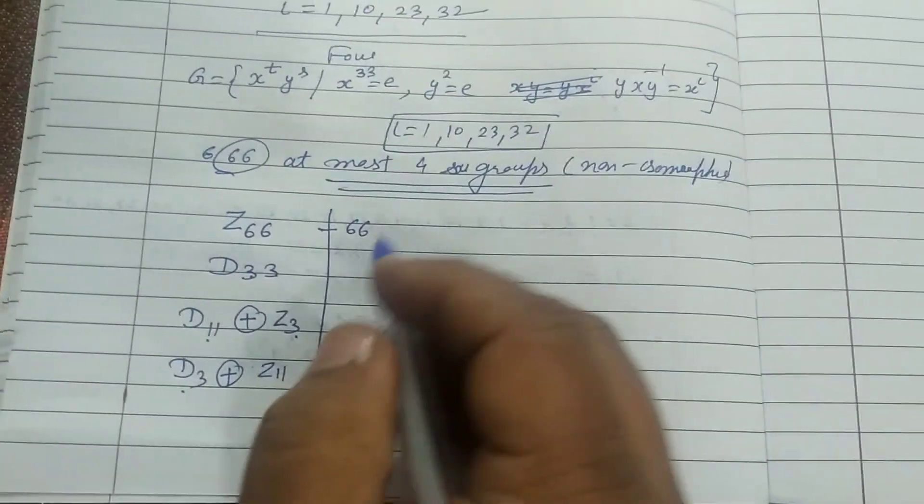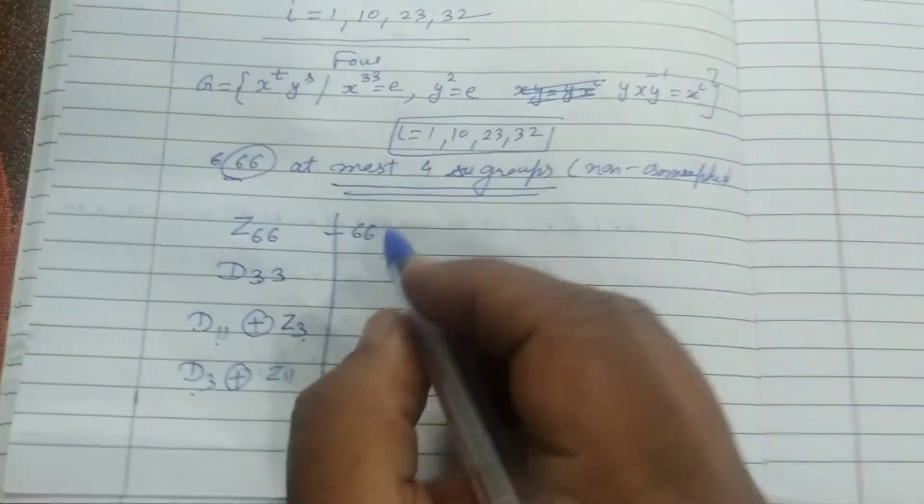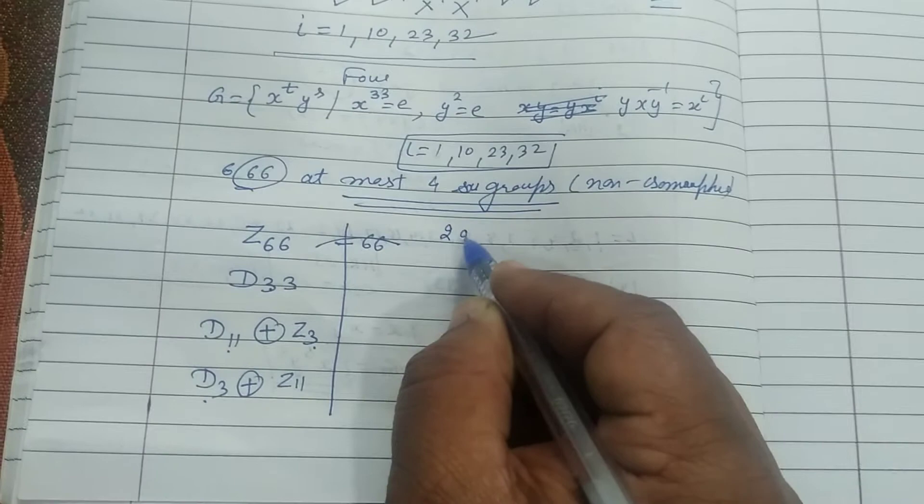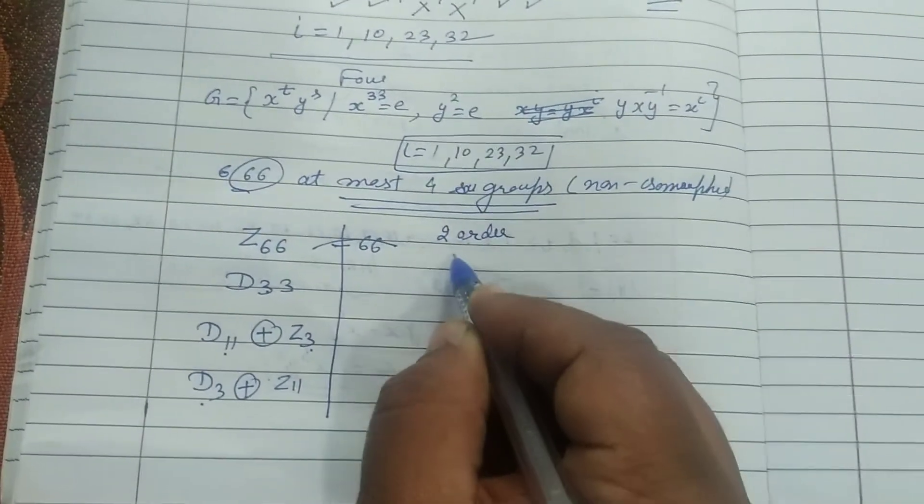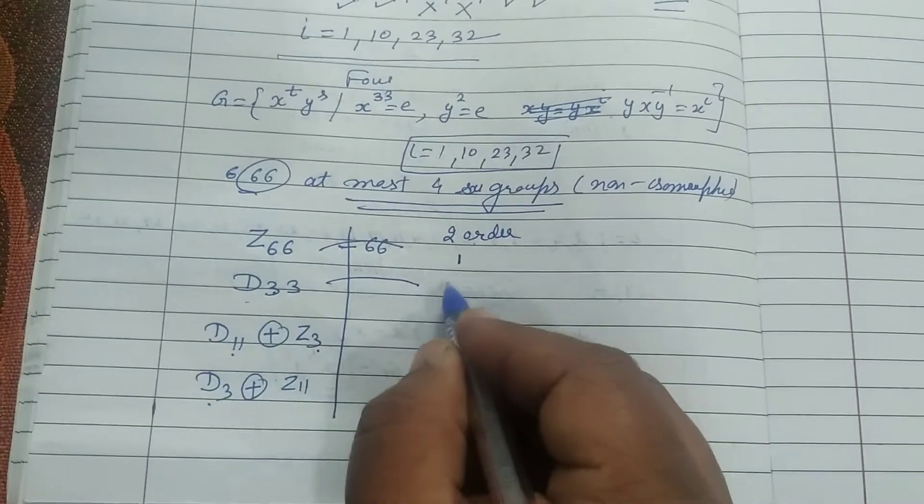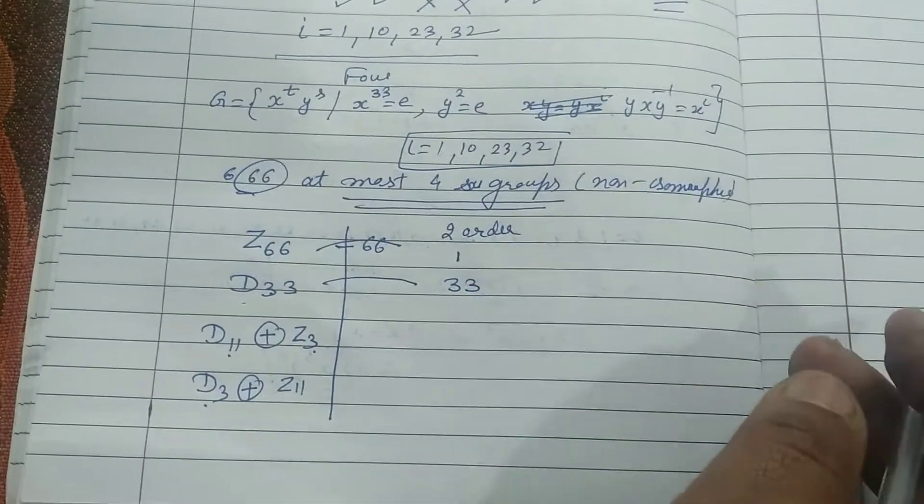Thik hai ji. Ab hum differentiate kaise karein. Iske liye aapko is group ki puri knowledge honi zaroori hai. Group order 66 mein, 2 order ke element ki sankhya, keval ek hoti hai. D₃₃ mein 33 elements hote hain jiska order 2 hota hai.